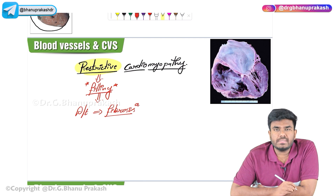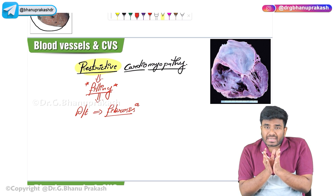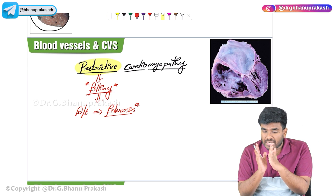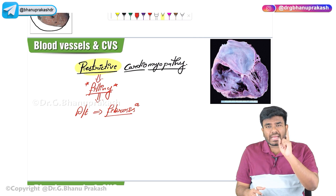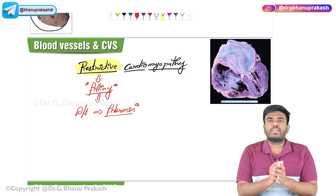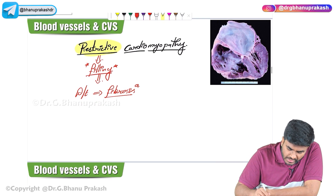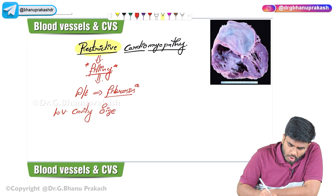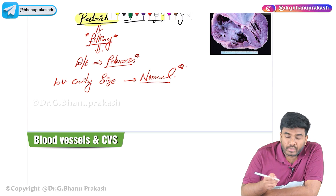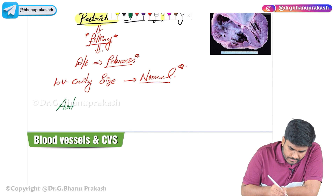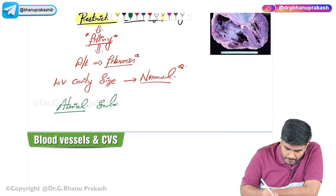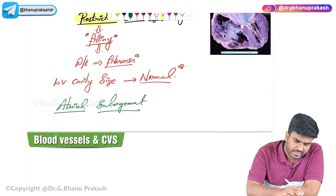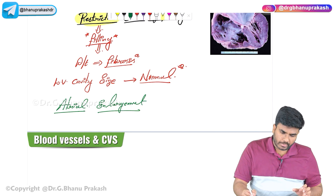An important point: in hypertrophic cardiomyopathy, the left ventricular cavity size is narrowed — the banana-shaped cavity. In dilated cardiomyopathy, the left ventricular cavity size is increased. But in restrictive cardiomyopathy, the left ventricular cavity size is normal. However, if you look at the atria, they are going to be enlarged. That is the important distinguishing point.